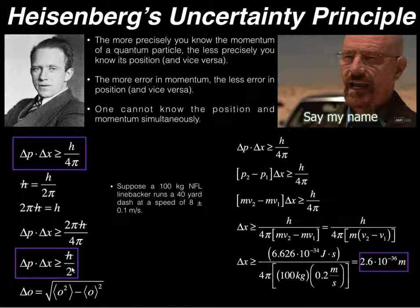Now, the main thing you should understand from this is that the product of the two uncertainties is on the order of at least h bar. That's one way of thinking about this.